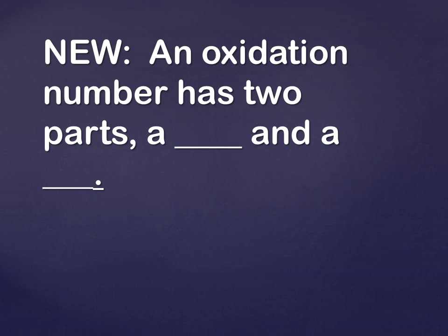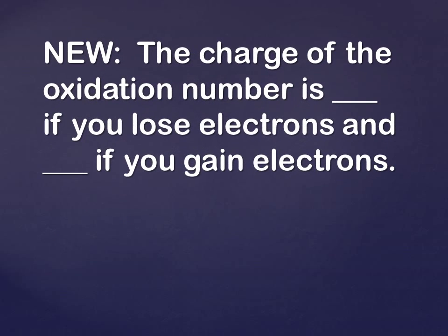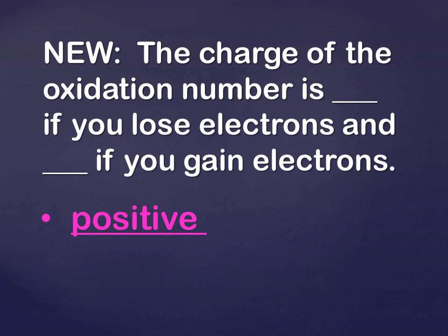So brand new information. An oxidation number, or a charge — remember those are synonyms — has two parts. The first part is the sign, so a plus or a minus. The second part is going to be a number. Now how do we figure that out?